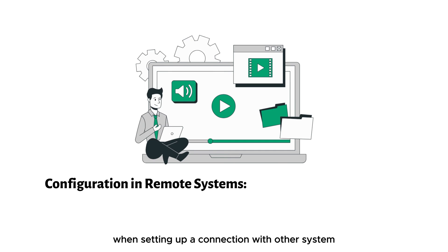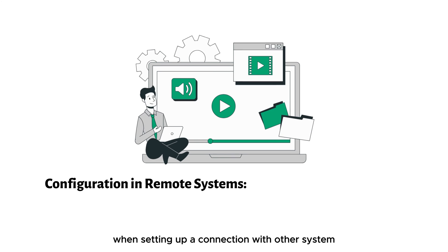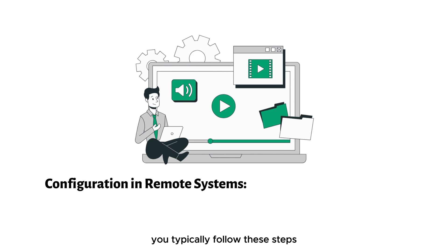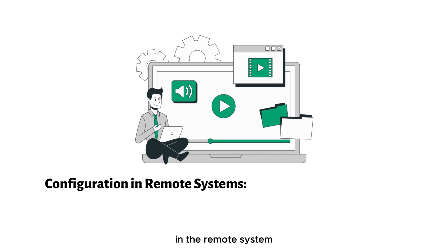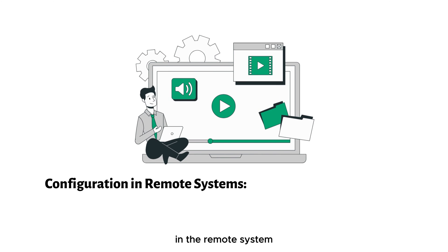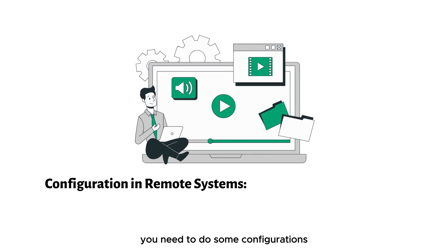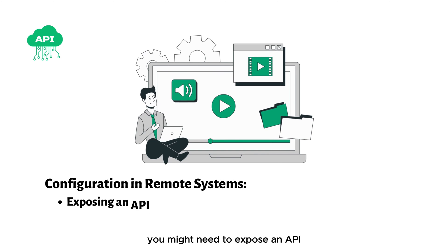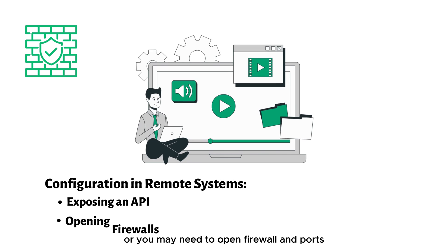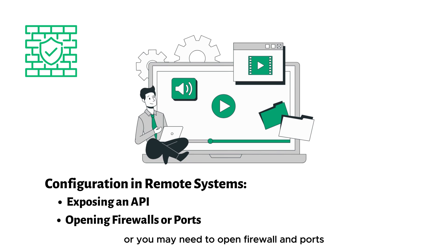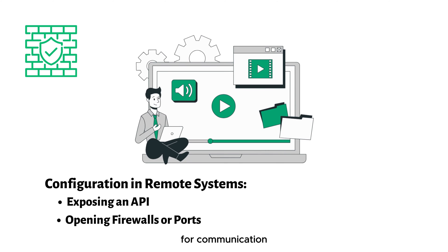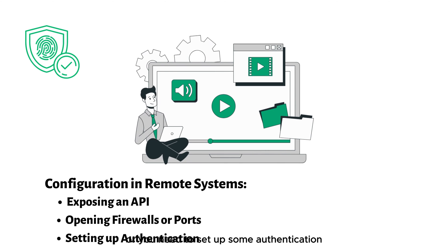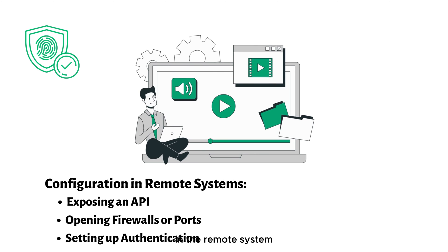When setting up a connection with another system, you typically follow these steps. In the remote system, you need to do some configurations. For example, you might need to expose an API, or you may need to open firewalls or ports for communication, or you need to set up some authentication in the remote system.